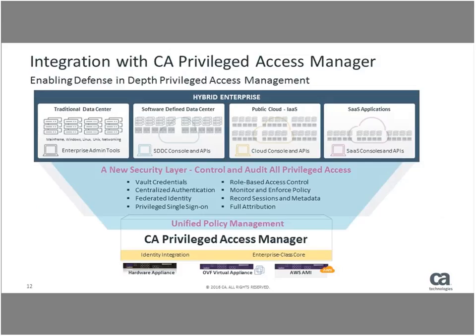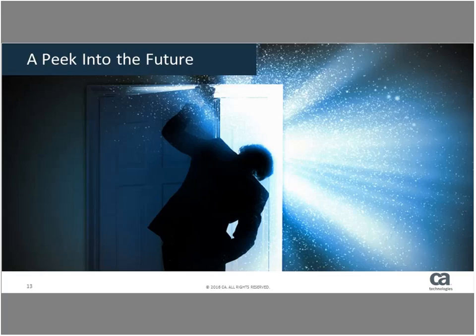The integration between PAM and PAM Server Control means the full-featured appliance-based capabilities of CA Privileged Access Manager remain in place, and the user who logs in to CA PAM will have their original ID captured and used for host-based fine-grained controls once they log into a server protected by Server Control. This is a very important integration to get the identity of the named user prior to them using a shared account. With that, I'll pass the presentation over to Mike DeLay to talk about what's coming next.